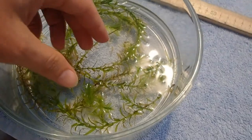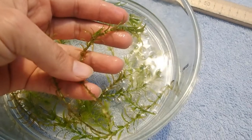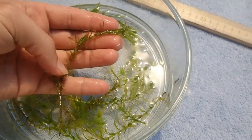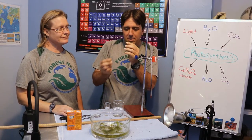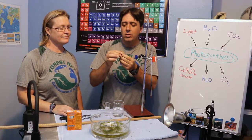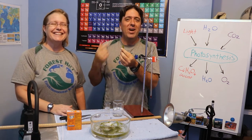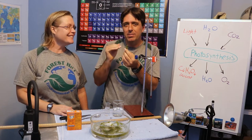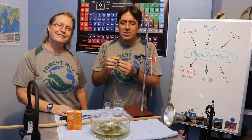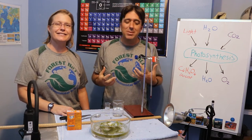Over here we have what we call Elodea, which is a common freshwater plant you can find in most rivers and lakes. What we're going to do is snap its stem and measure the rate of bubbles that come out of the stem. The faster the bubbles come out, the faster the rate of photosynthesis. The slower the bubbles, the slower the rate — so that gives us a general measure of what's going on inside the plant.